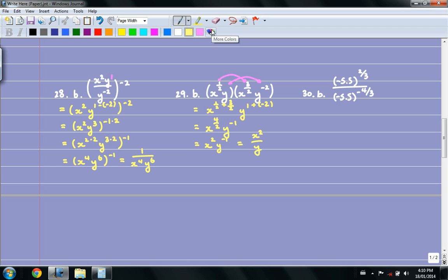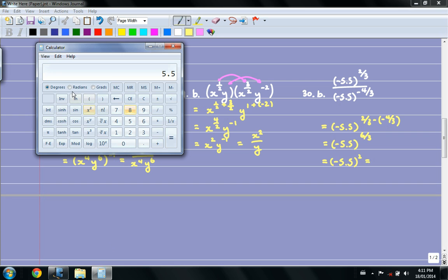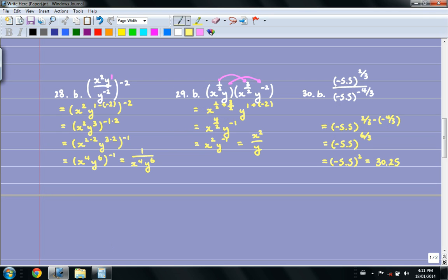Last question. So you can see that I have 30b here. And you're dividing 2 exponents of the same base, meaning you can subtract the exponents. So I really can just write this as negative 5.5 to the 2 thirds minus negative 4 thirds. That would be negative 5.5 to the 6 thirds power. And of course that's just really negative 5.5 squared. And negative 5.5 squared is 30.25.